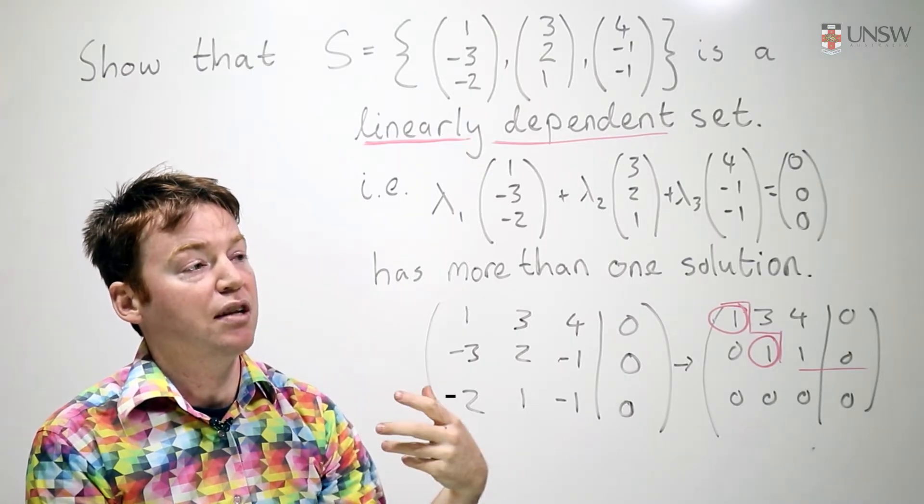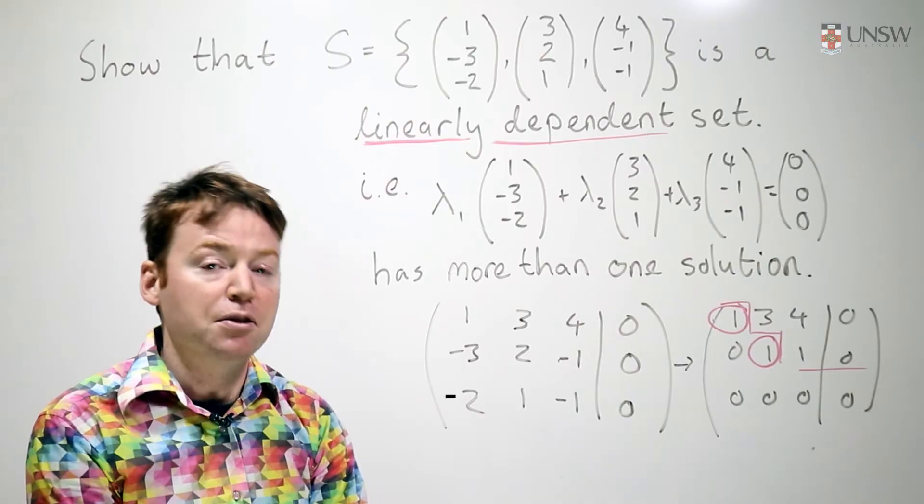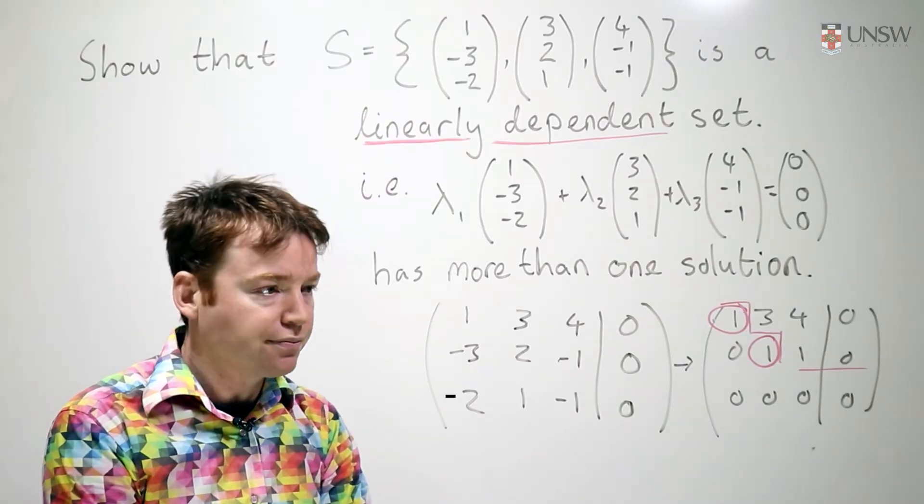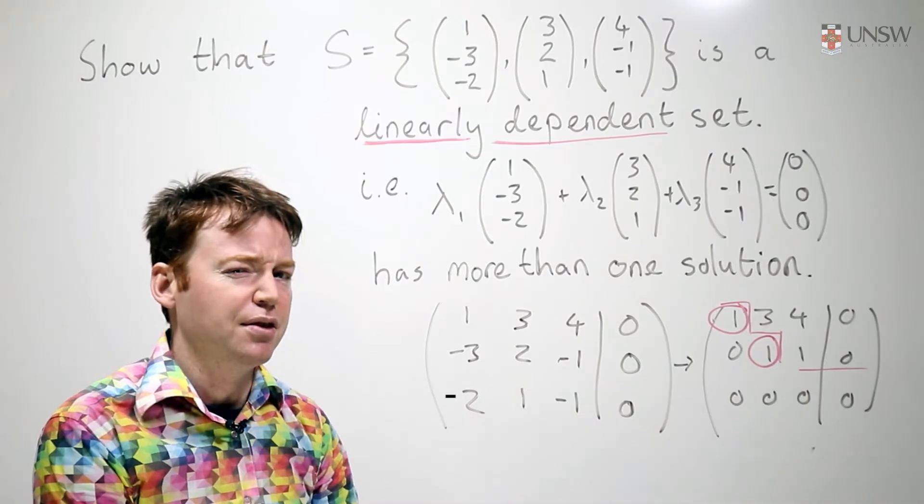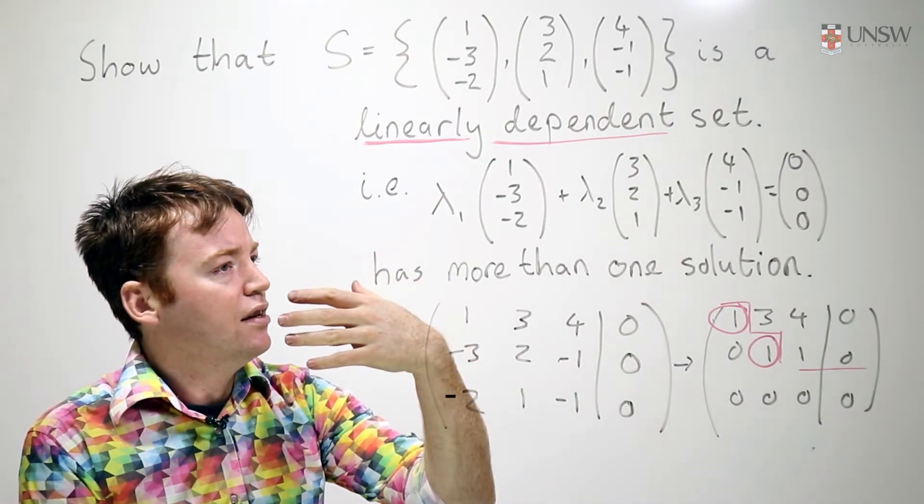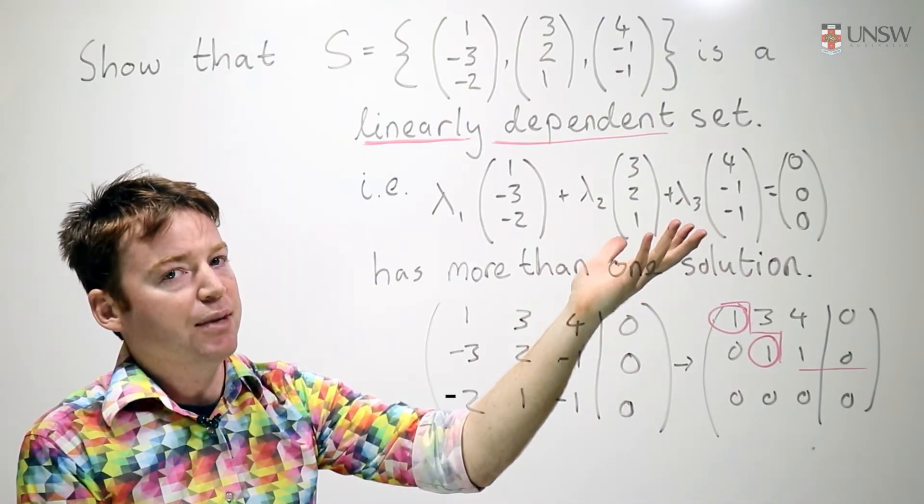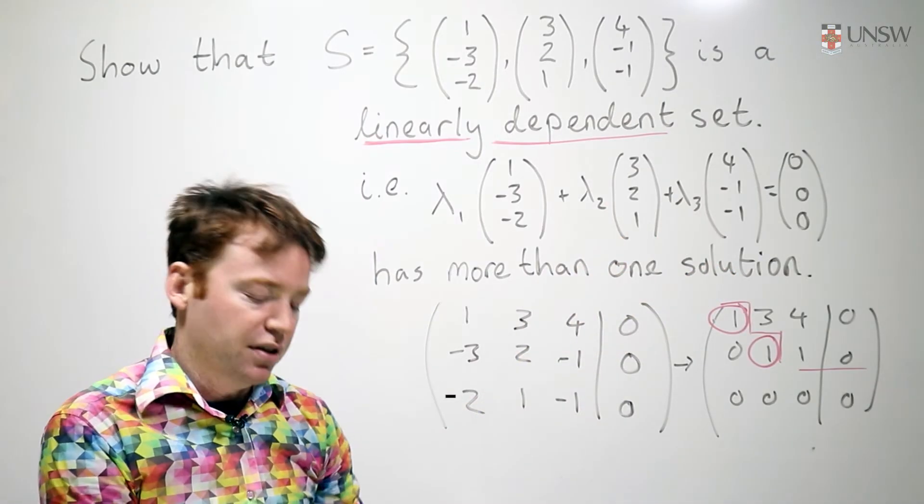In fact, it tells you you can use lambda 3 as a parameter and thereby parameterize the infinite space of solutions to this equation. But at this point, we just need to know there's lots of solutions. So there is more than one solution to this equation. In fact, there are infinitely many solutions. Therefore, the set is dependent.